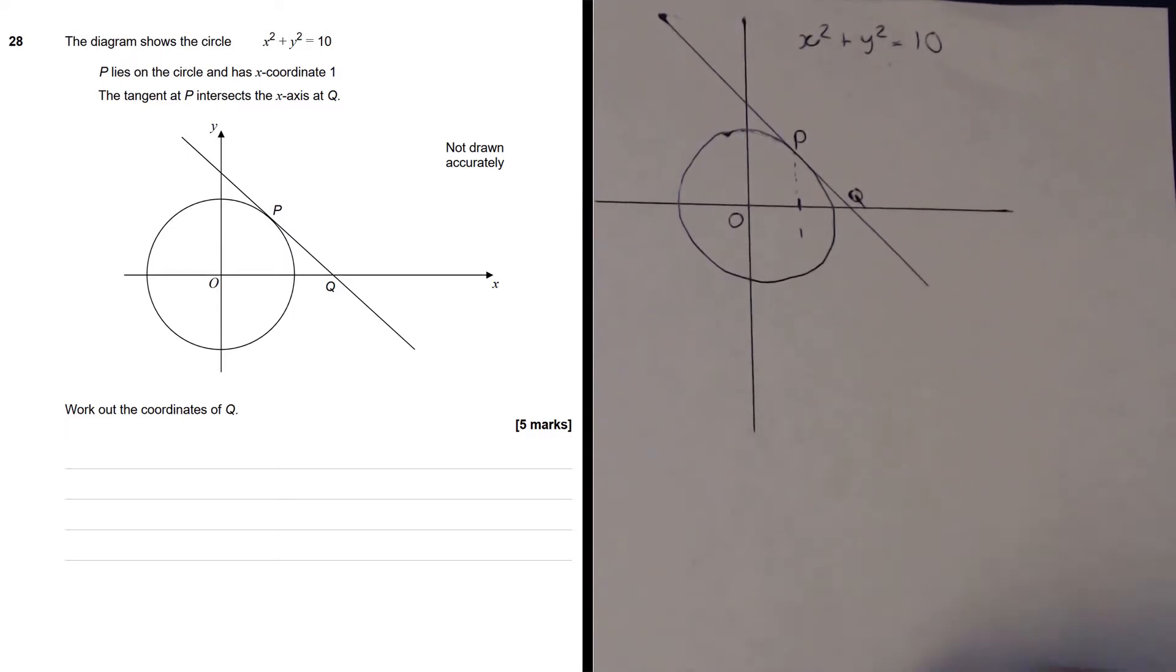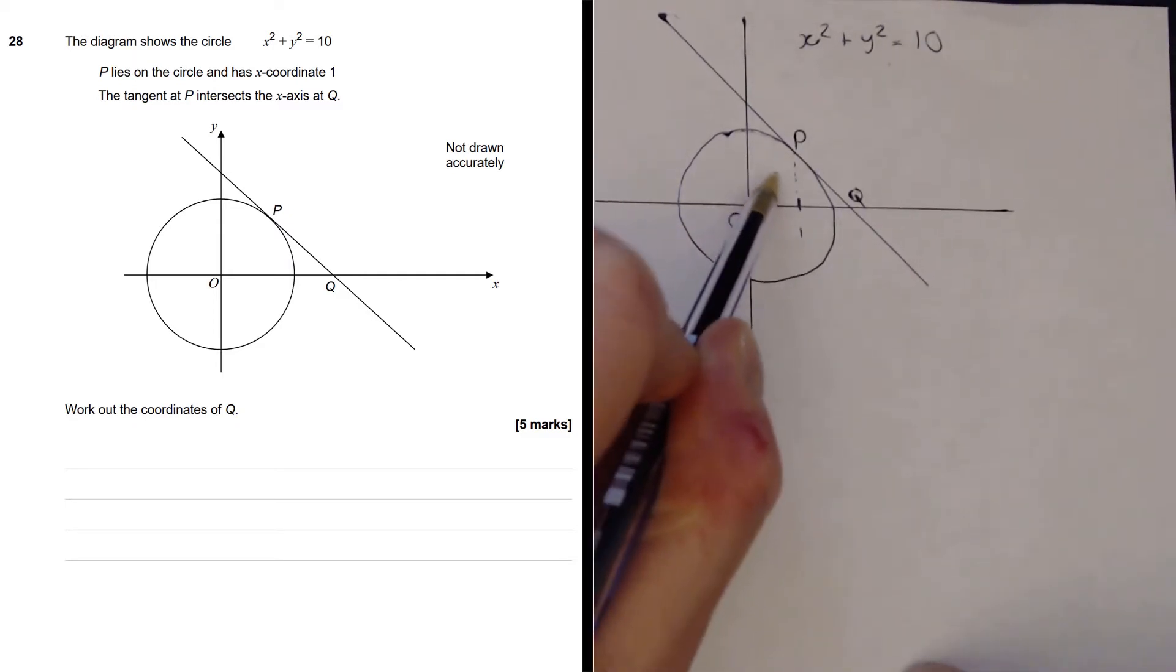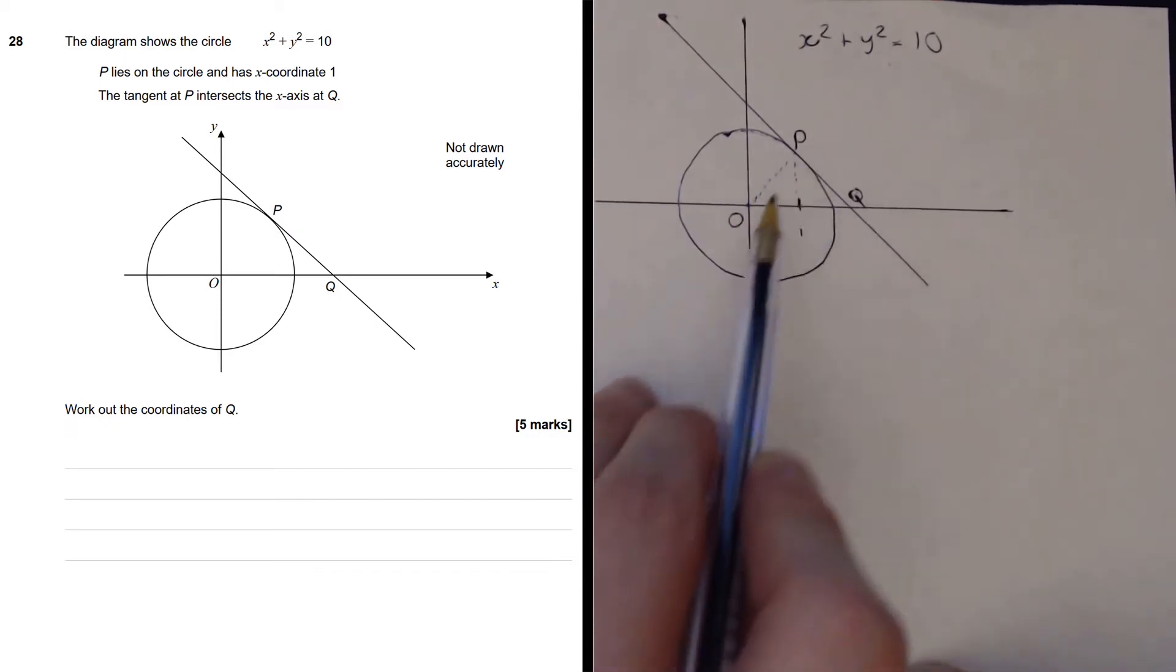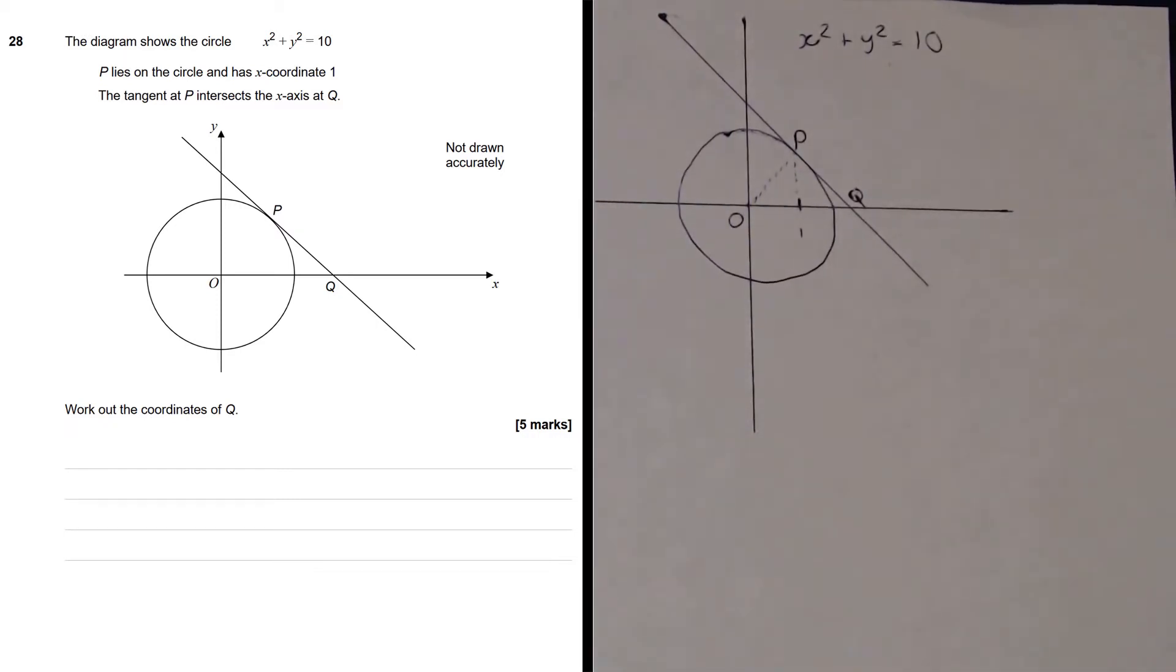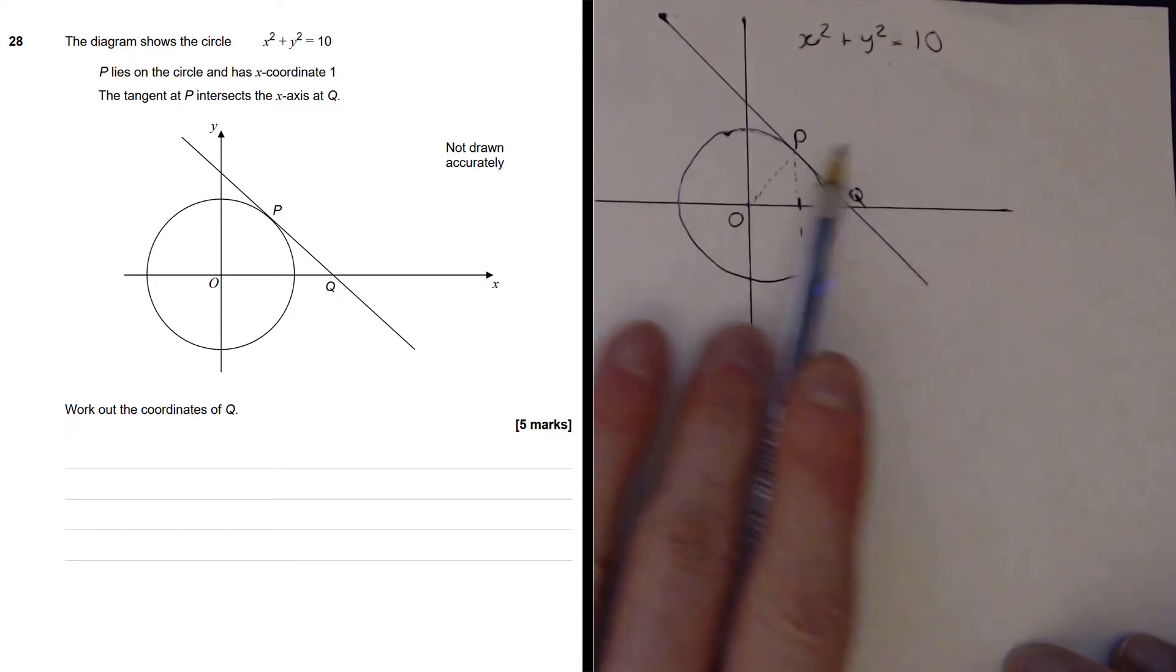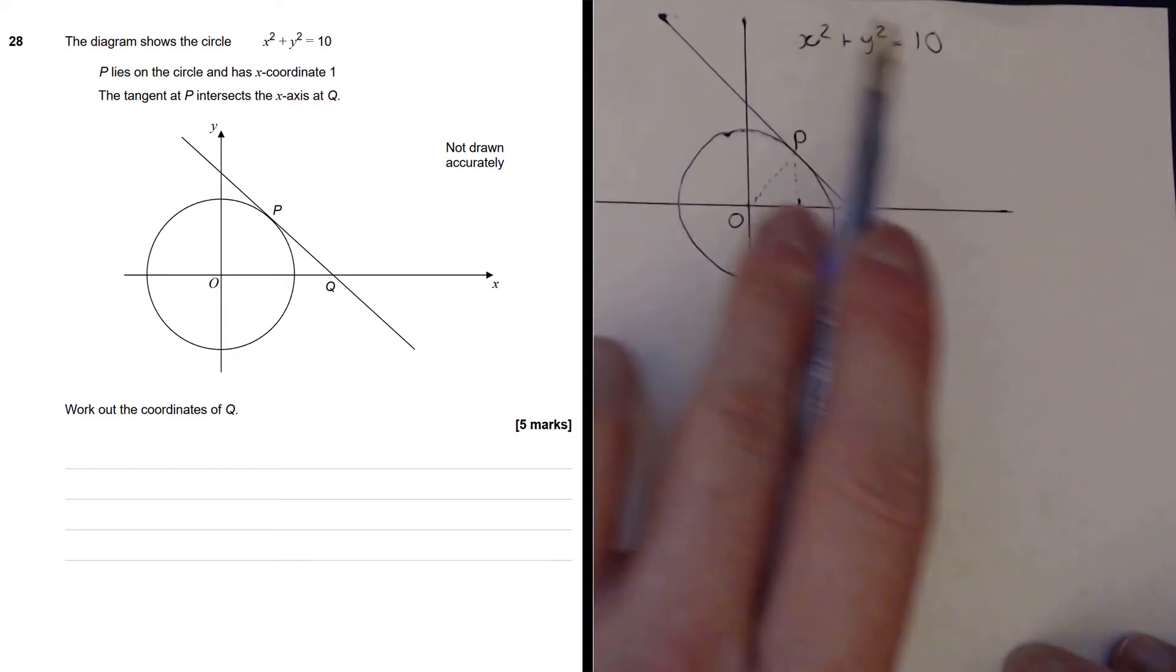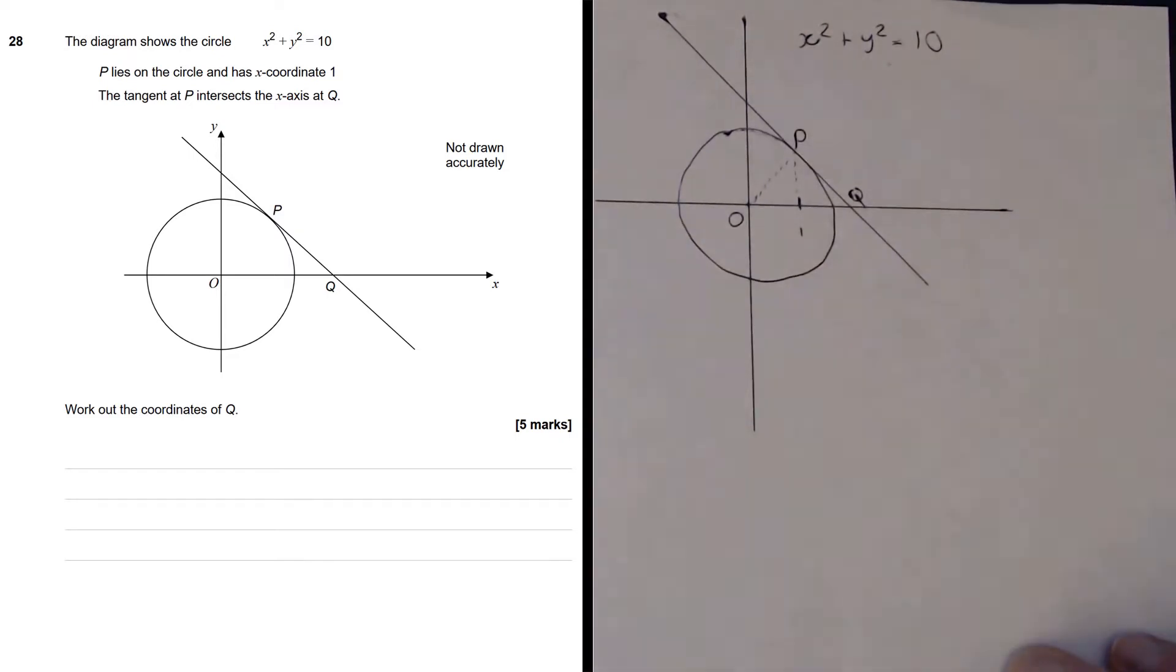The first thing I would do is consider this dotted straight line here, that straight line that goes from the origin to the point P. And why would I do that? Well, we know point P lies both on the line and the circle, but we have an equation for the circle and we know what the x-coordinate is.